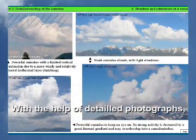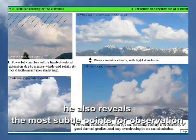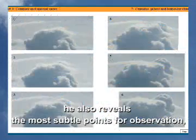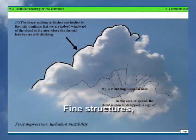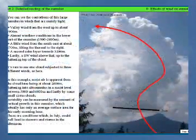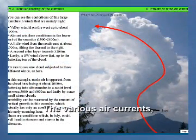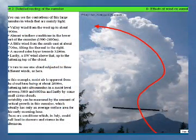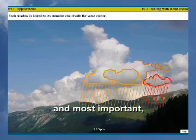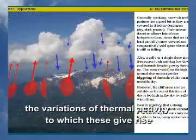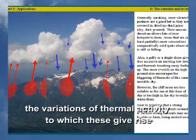With the help of detailed photographs, he also reveals the most subtle points for observation, rendering them readable and exploitable. Fine structures, the various air currents, interactions with the sun, and most importantly, the variations in thermal activity to which these give rise.